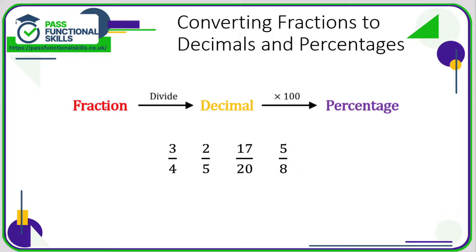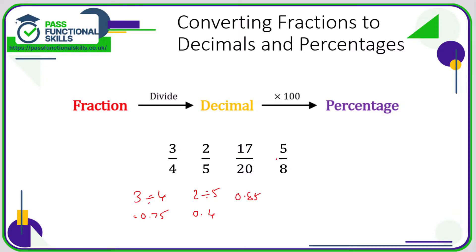To go from a fraction to a decimal, all you need to do is top divided by bottom. So three quarters: three divided by four gives you 0.75. Two fifths: two divided by five gives you 0.4 — or you may remember that one fifth is 0.2, so two fifths is 0.4. Seventeen twentieths: 17 divided by 20 gives 0.85. Five eighths: five divided by eight gives 0.625.